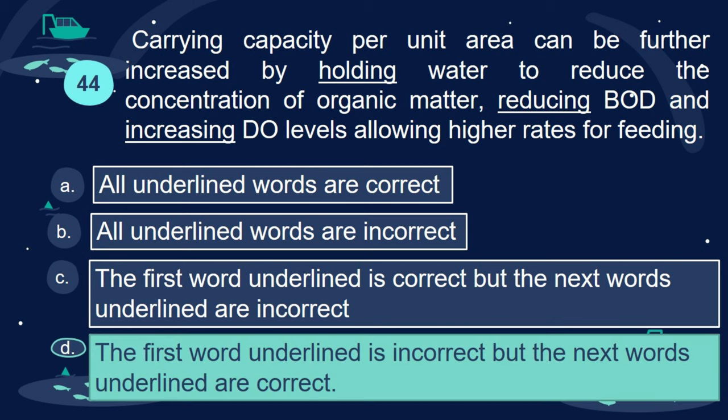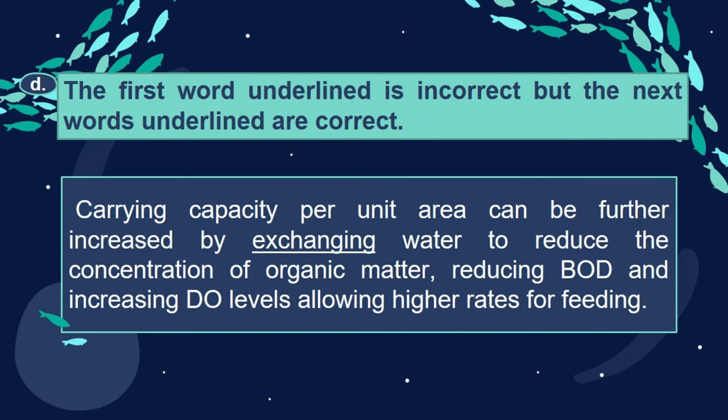Answer: D. The first word underlined is incorrect but the next words underlined are correct. Carrying capacity per unit area can be further increased by exchanging water to reduce the concentration of organic matter, reducing BOD, and increasing DO levels allowing higher rates for feeding.